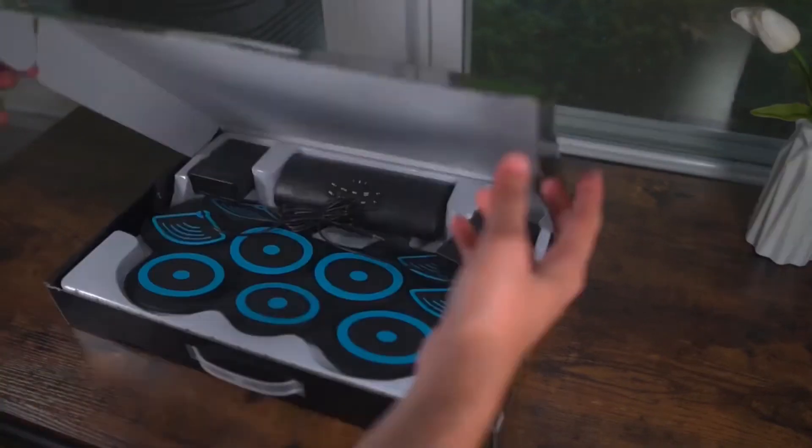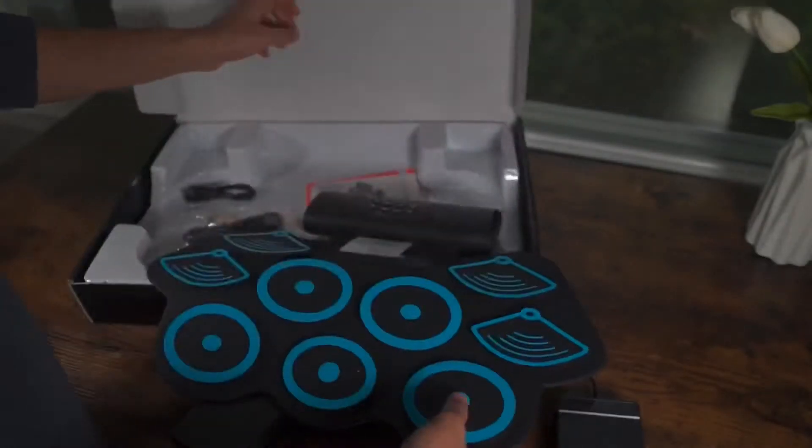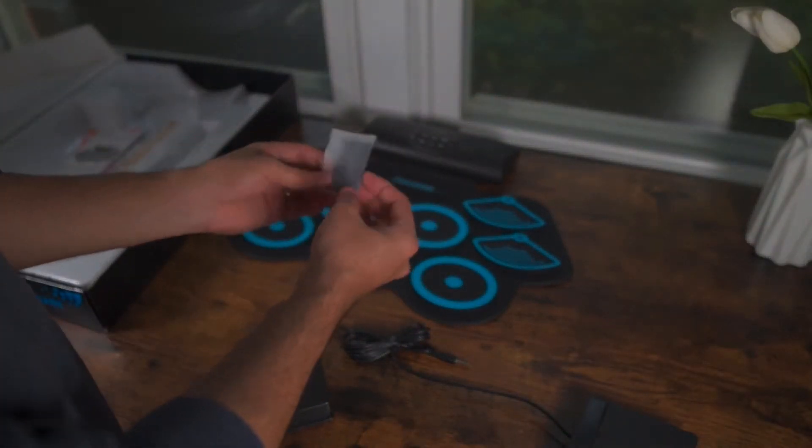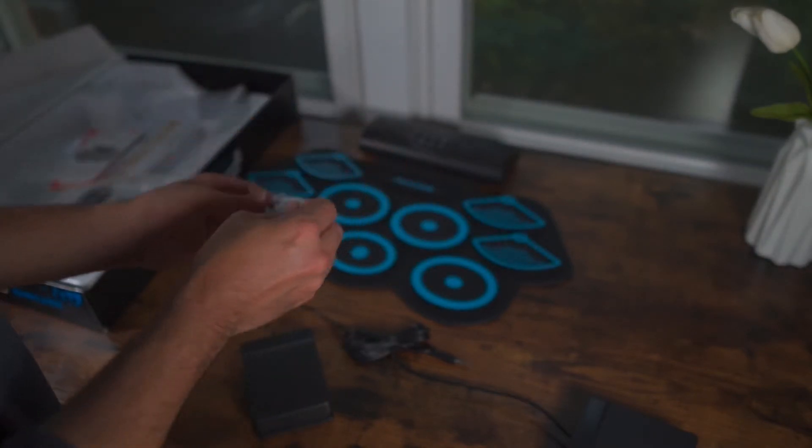We got the electronic drum sets in the color blue. This is what it looks like. It comes with the electronic drums and the control hub at the top, and then the battery and the pedal and the power adapter.